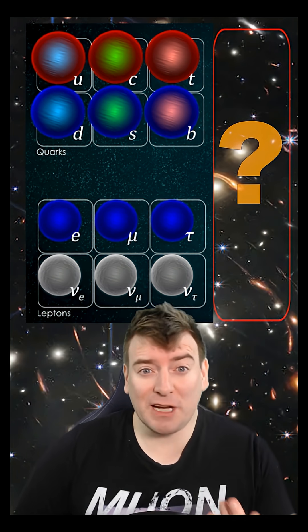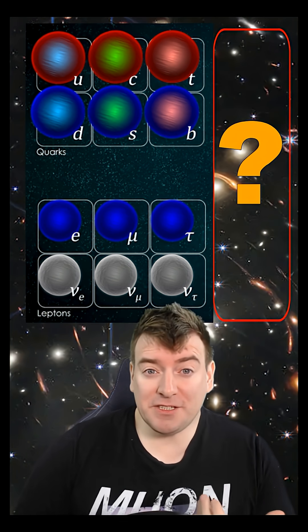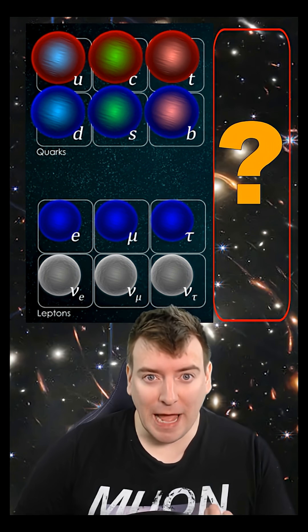Could there be even more heavier copies? Well, it's possible, but they'd have to be very heavy. All evidence suggests that there are only three light generations.